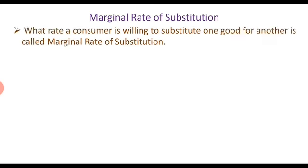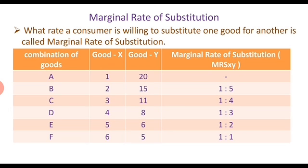Marginal rate of substitution. The rate at which a consumer is willing to substitute one good for another is called the marginal rate of substitution. In the combinations A, B, C, D, E, and F, when X good increases, Y good decreases. The consumer substitutes X good for Y good, and the rate of substitution is gradually diminishing.